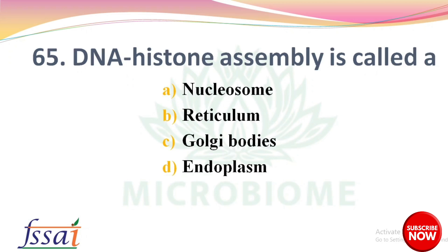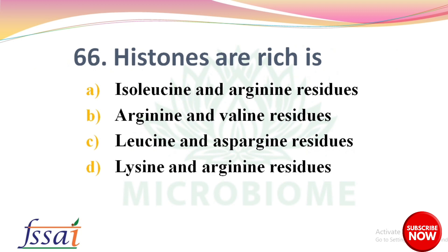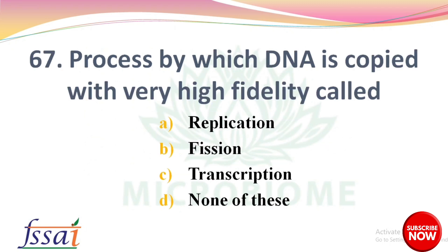DNA-histone assembly is called — options: nucleosome, reticulum, Golgi bodies, endoplasm. The right answer: option A, nucleosome. Next: histones are rich in — options: isoleucine and arginine, arginine and valine, leucine and asparagine, lysine and arginine. The right answer: option D, lysine and arginine residues. Next: the process by which DNA is copied with very high fidelity is called — options: replication, fission, transcription, none of these. The right answer: option A, replication.